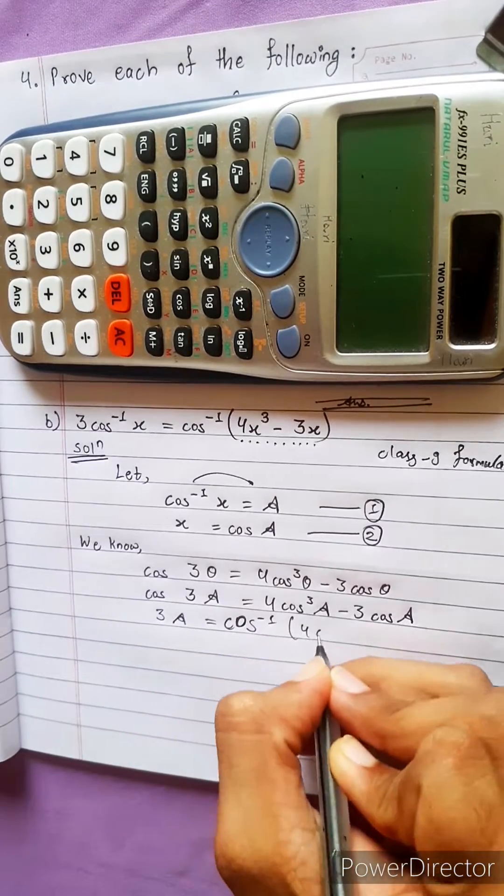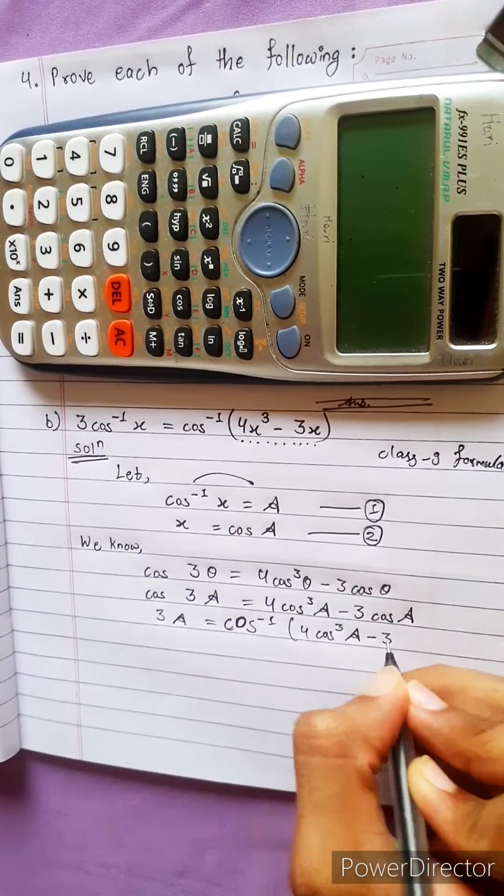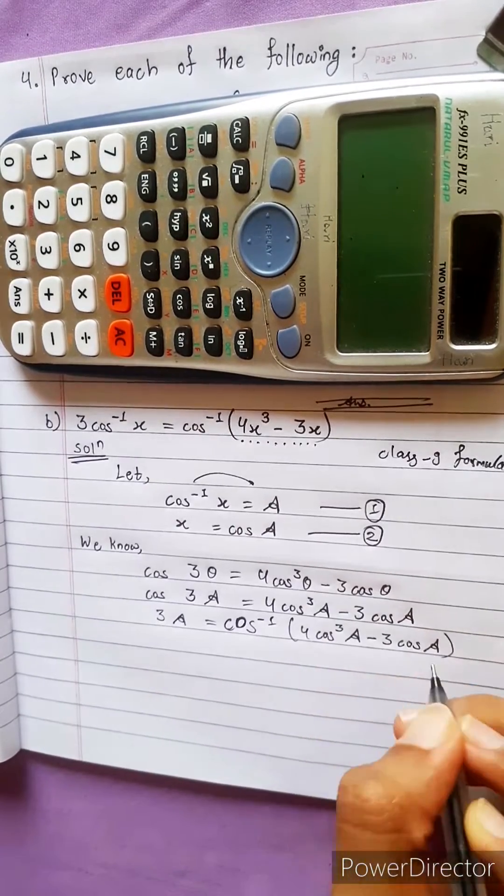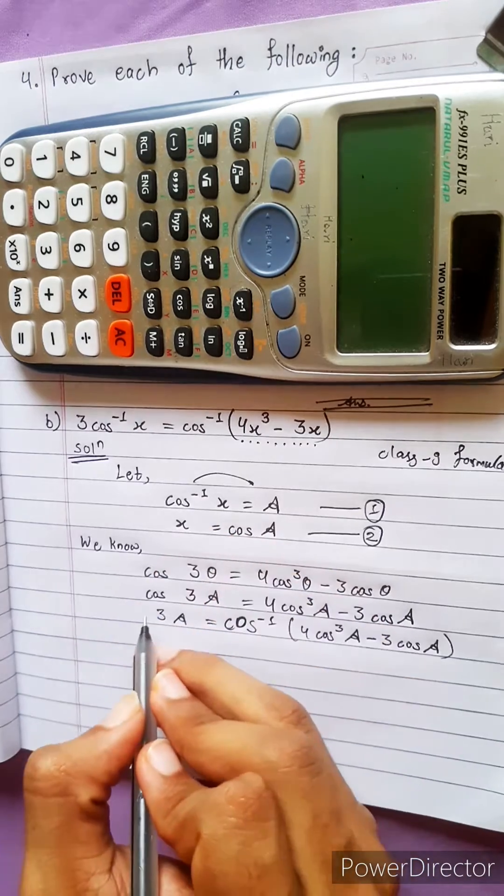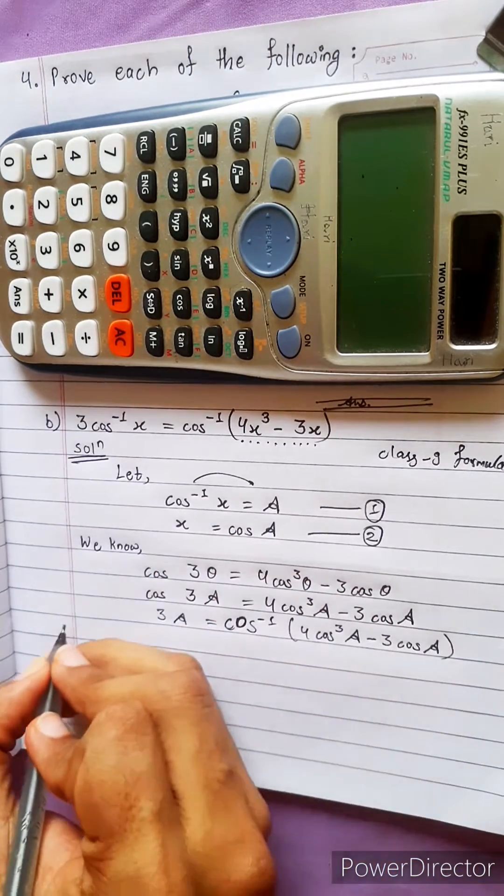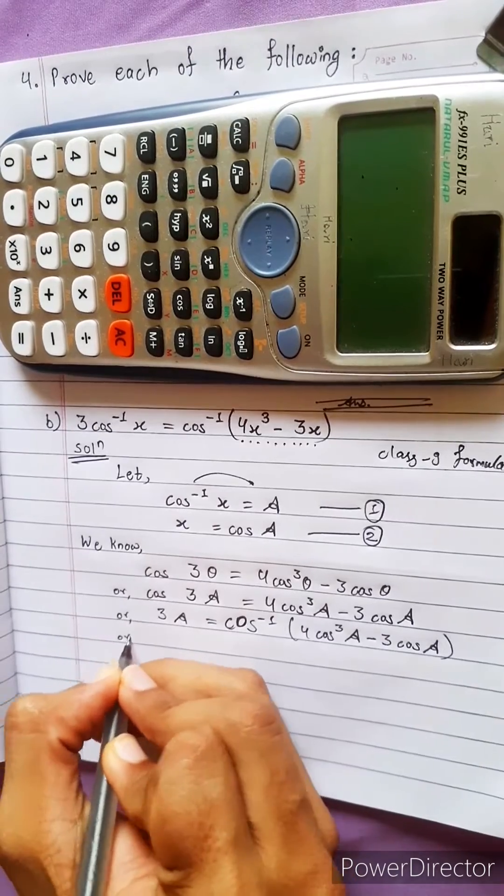Now 4 cos cube A minus 3 cos A. How we got this? Because cos transfer, inverse transfer this side. Cos transfer this side, cos inverse.